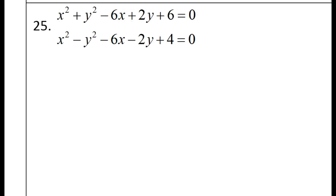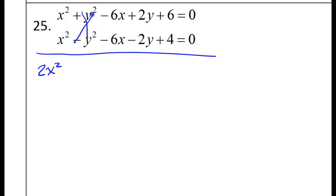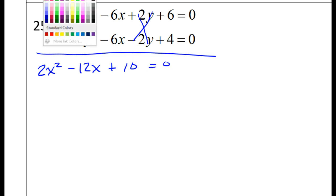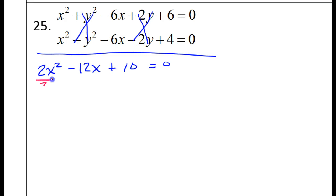Number 25 is going to be even easier because I already have opposites that cancel — the y squared terms are opposite, and I have a positive 2y and a negative 2y, so I don't even have to multiply by negative 1. Combining like terms: 2x squared, then these cancel, then negative 12x, then these cancel, plus 10 equals 0. All divisible by 2, so dividing through gives x squared minus 6x plus 5 equals 0.